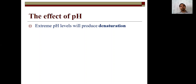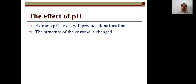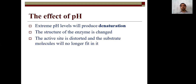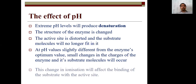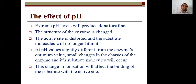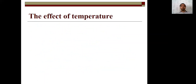If we alter the pH of the medium, then both Pepsin and Trypsin cannot work — meaning an optimum pH is required. Why does pH affect enzymes? Because extreme pH levels produce denaturation. As we saw in the first lecture, protein denaturation and renaturation: if we provide high pH, then denaturation occurs, the structure of the enzyme is changed, the active site is destroyed, and the substrate molecule will no longer fit into it. At pH values slightly different from the optimum, small changes in the enzyme and substrate molecule occur — the enzyme can still bind, but it does not give maximum activity. This change in ionization affects the enzyme's substrate-binding capacity.